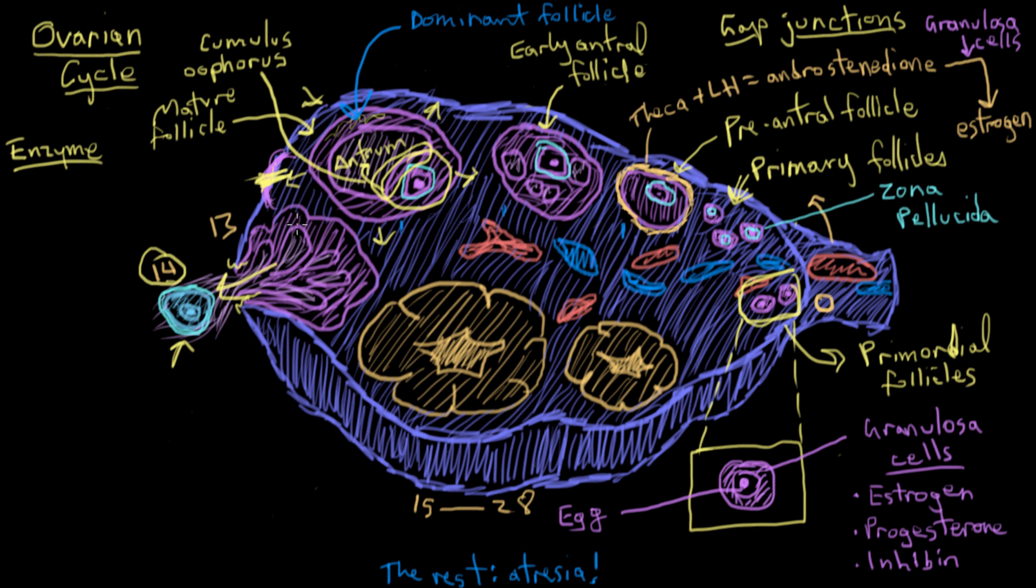So now you have the egg out here, but what about the old follicle it was in? The follicle actually collapses a little and transforms into a structure called the corpus luteum. And in this transformation, the granulosa cells get a lot bigger and start to produce more estrogen, progesterone, and that other hormone inhibin that we mentioned before.